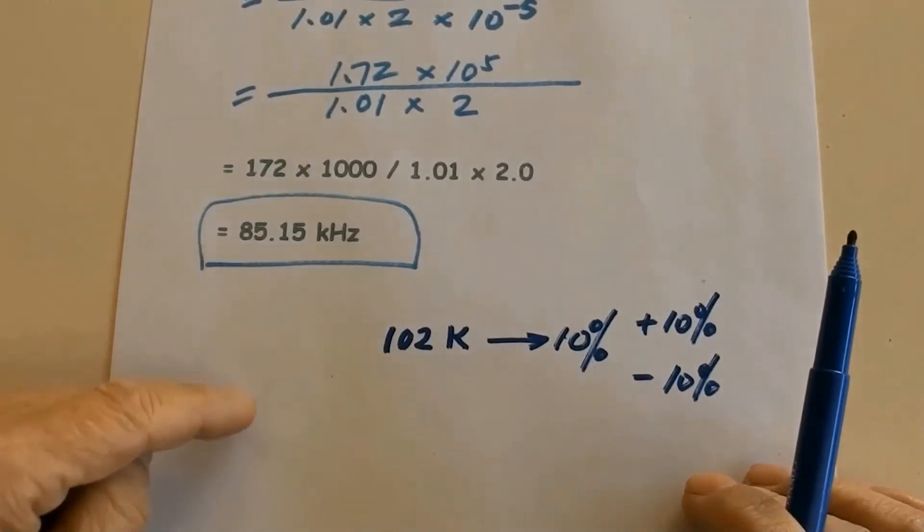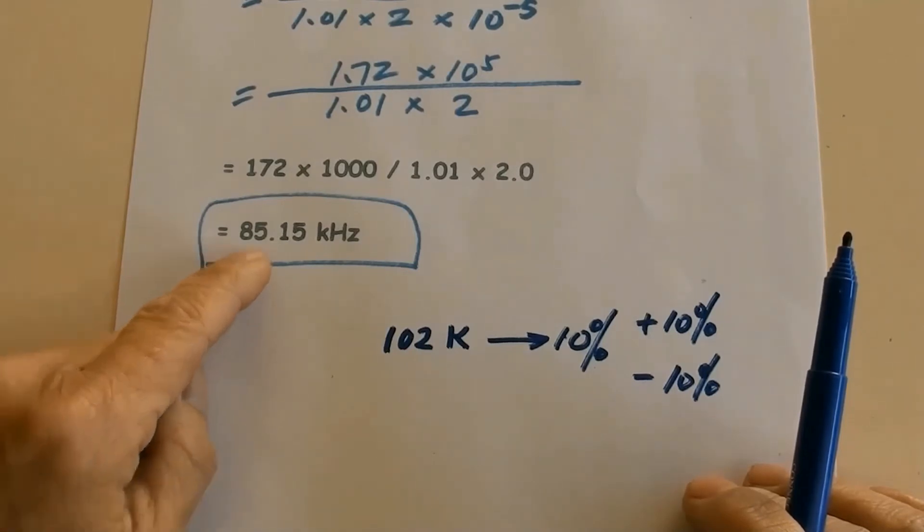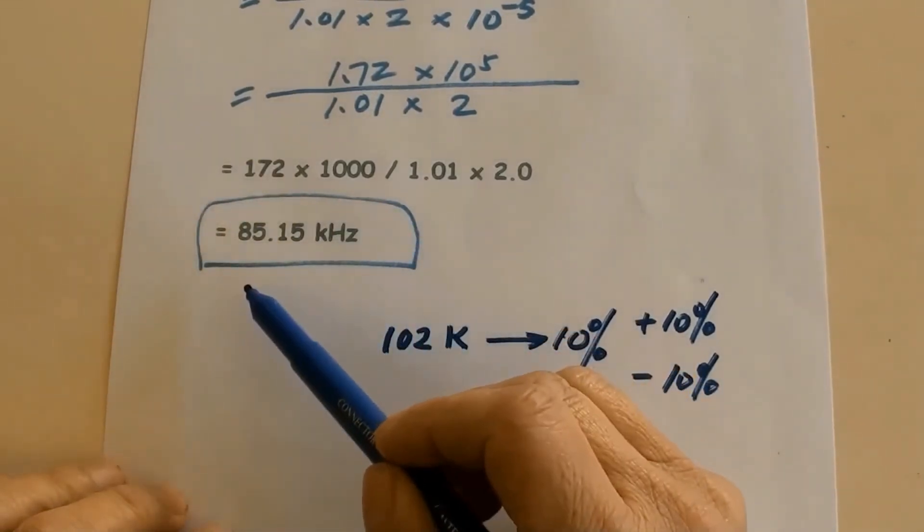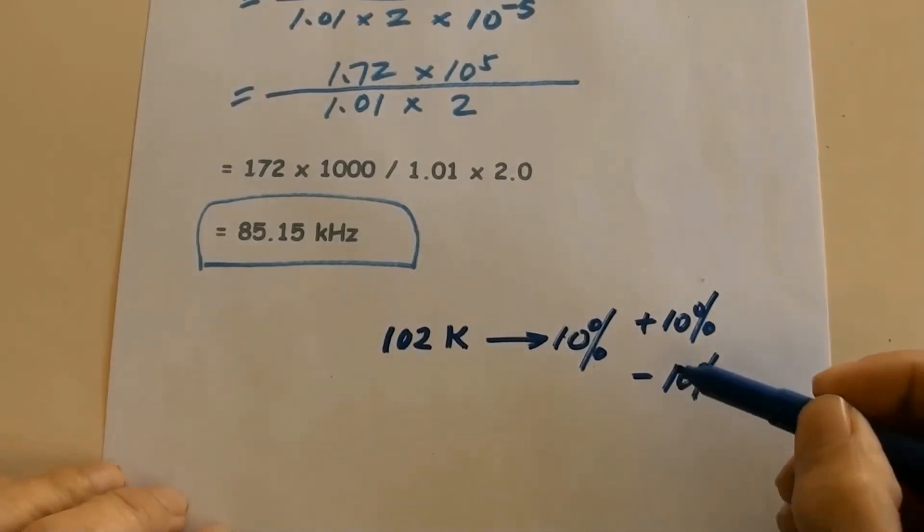So the frequency calculated can be lower or higher a bit, according to vary values of the capacitor.